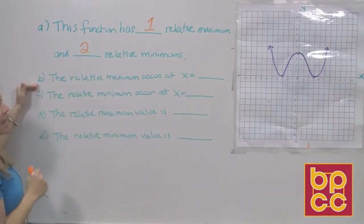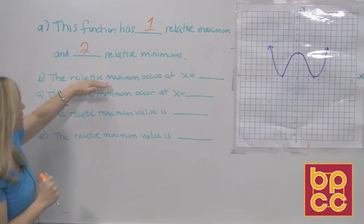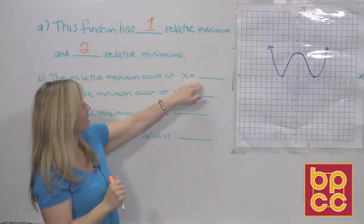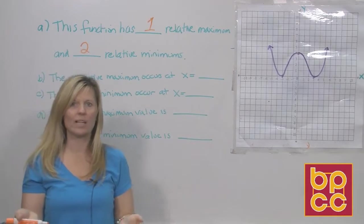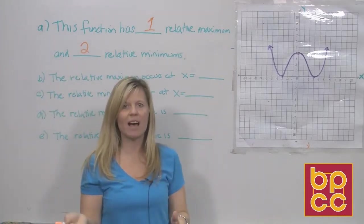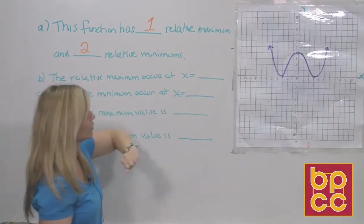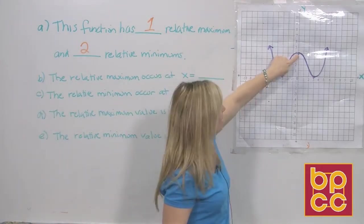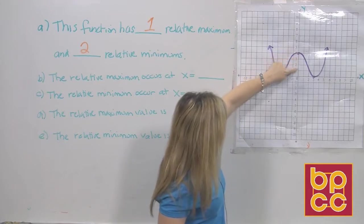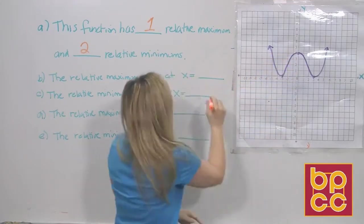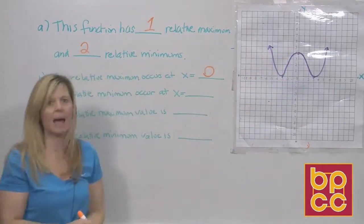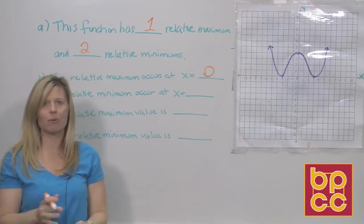Now, the next question says, the relative maximum occurs at x equals. Remember, these are points. They have x values and y values. So we're going to go back to our graph, put our finger on our maximum point, which is here. What is its x value? Well, the x value of this point is at zero. So we would say the relative max occurs at x is zero.